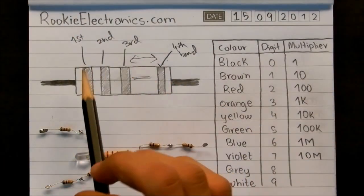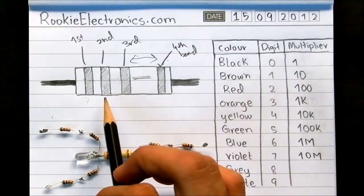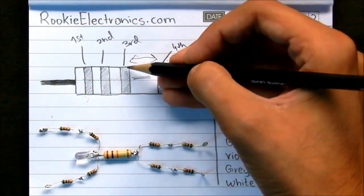The 1st band is the 1st significant digit. The 2nd band is the 2nd most significant digit of the value of the resistor. And the 3rd band is the multiplier.